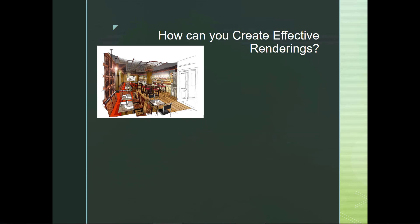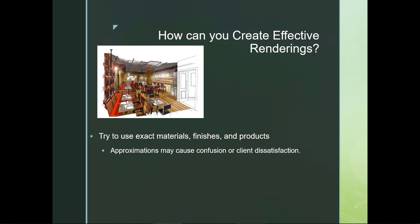So how can you create effective renderings? You definitely always want to try to use exact materials, finishes, and products when you can. It can be difficult to do this digitally as not all furniture is modeled by the companies you're trying to source from. You don't want to put in a sofa that looks completely unlike what your client is actually looking to purchase. If you have approximations that are off, it can create confusion or dissatisfaction and the client won't buy into your designs. So it's super important to try and use exact materials, finishes, products, colors, lighting, and fixtures to help the client visualize what the space is going to look like.